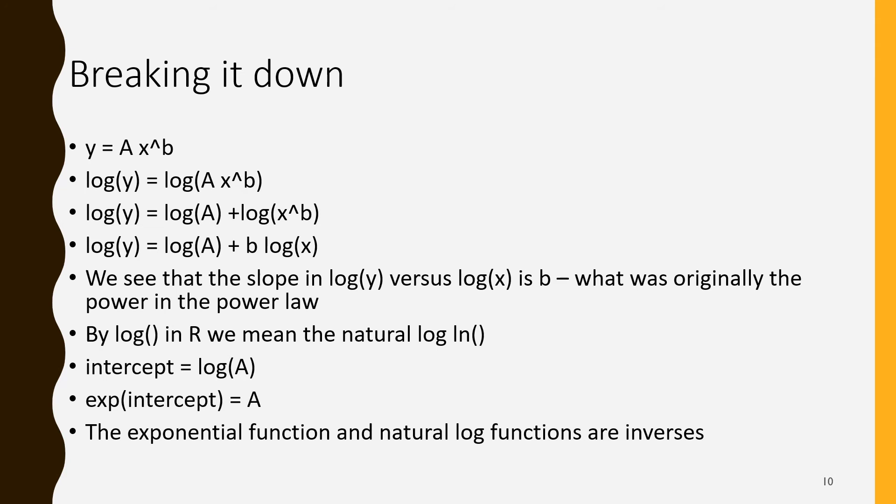Next, the logarithm of something raised to a power, the power can come out in front of the logarithm and multiply the logarithm. Now we have log of y equals log of a plus b log of x. We see log of y is in place of a y in a normal straight line and log of x is replacing the x in a normal straight line. So b is multiplying the log of x, making it effectively the slope in this new thing.